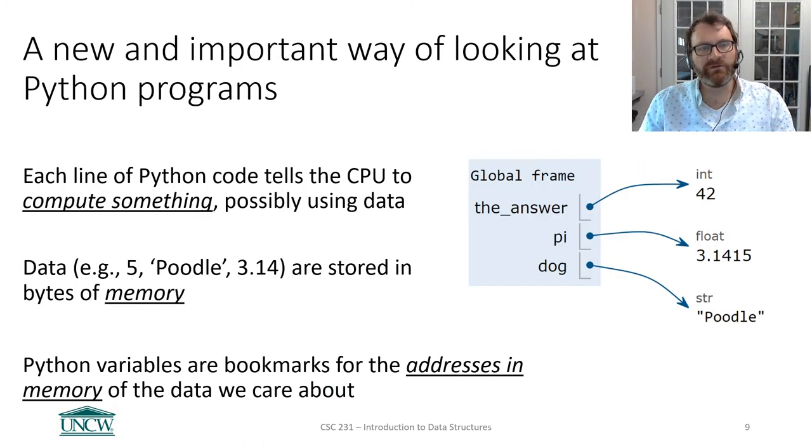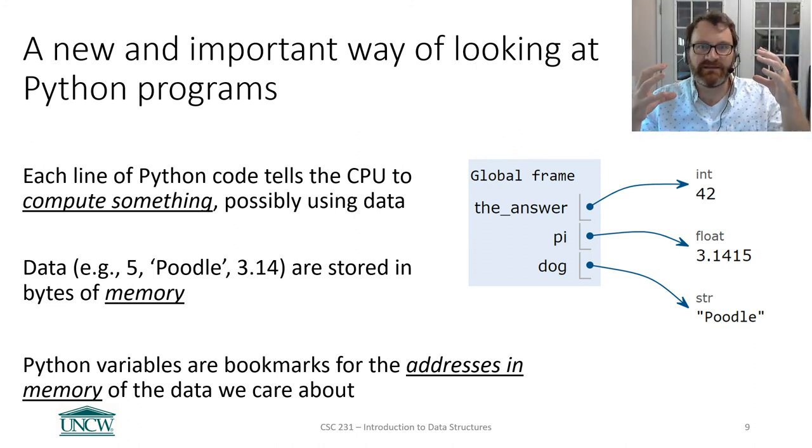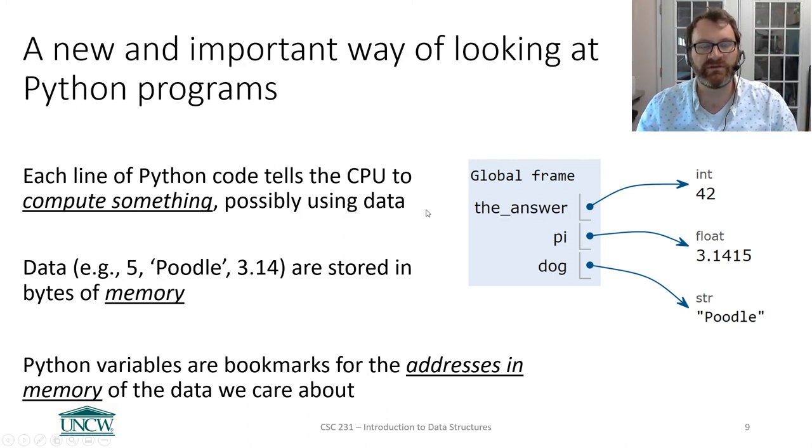So, a new and important way of looking at Python programs. You really gotta, this has to sink in deep because it's so important. Each line of Python code tells the CPU to compute something. Possibly using some data. Possibly using some variable data. Data, for example, 5, Poodle, 3.14. These are data. These are values. They're not variables. They're values. Data are stored in bytes of memory and Python variables are bookmarks for the addresses in memory of the data we care about. Super important.